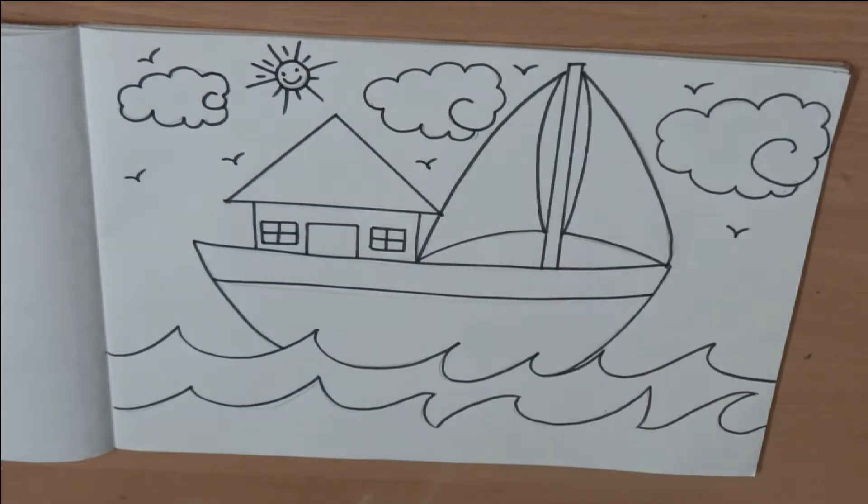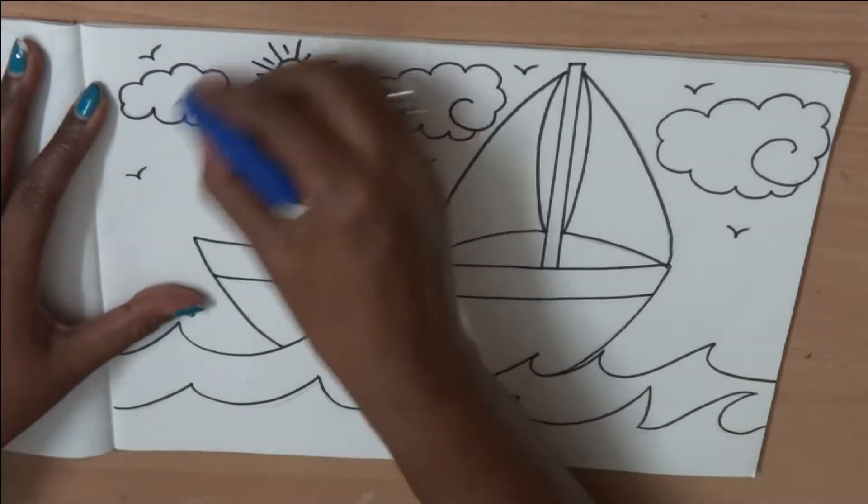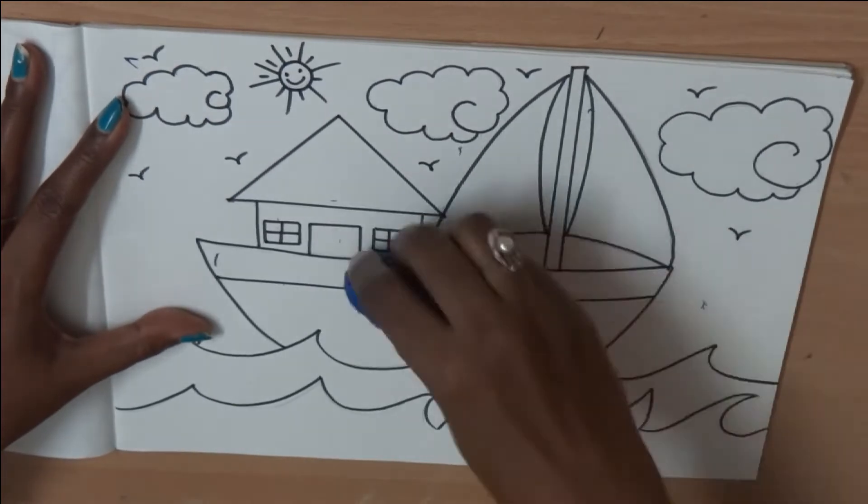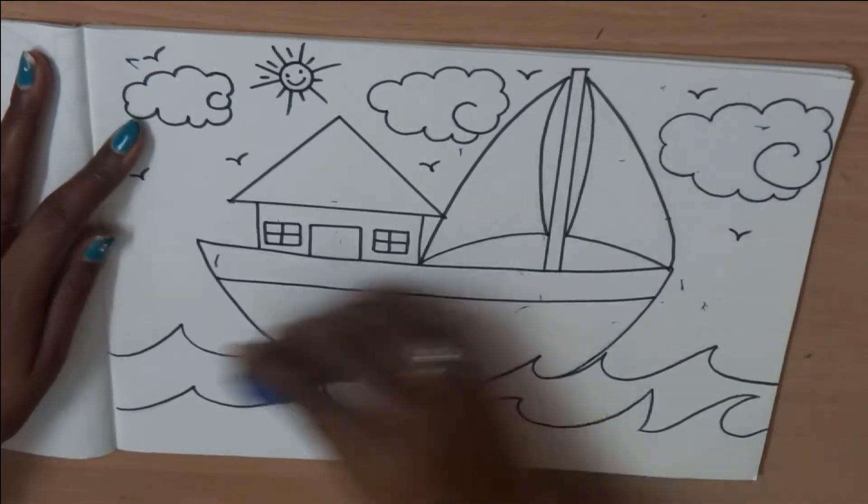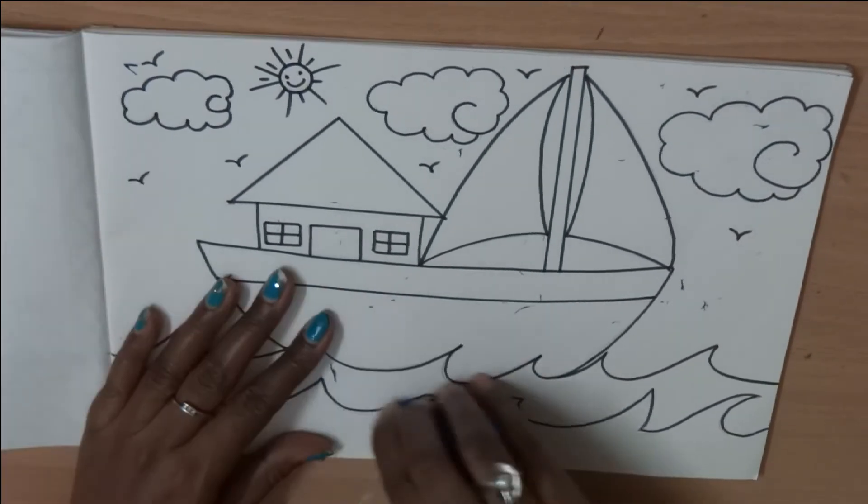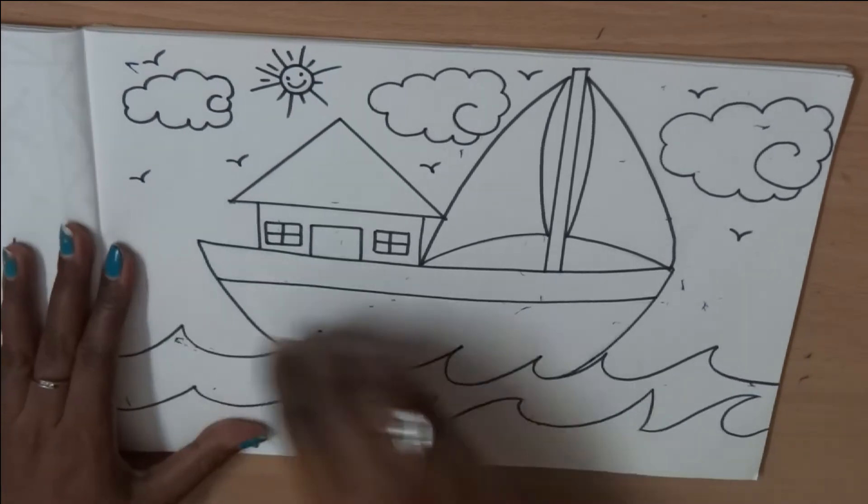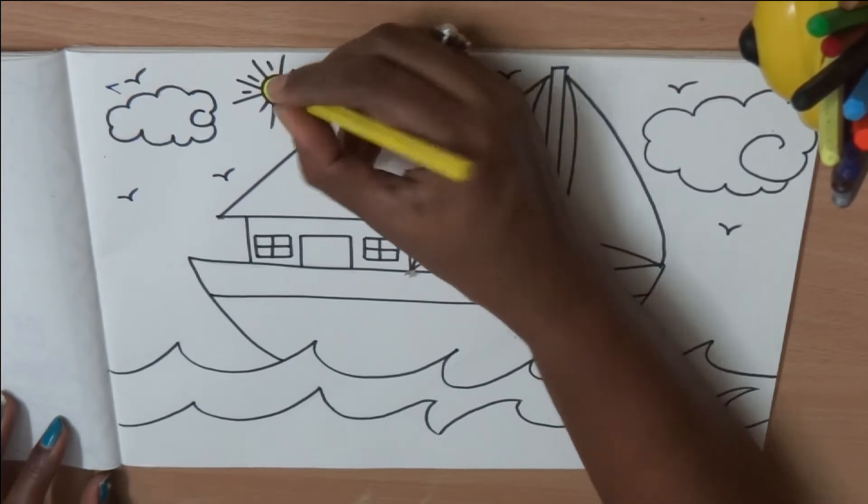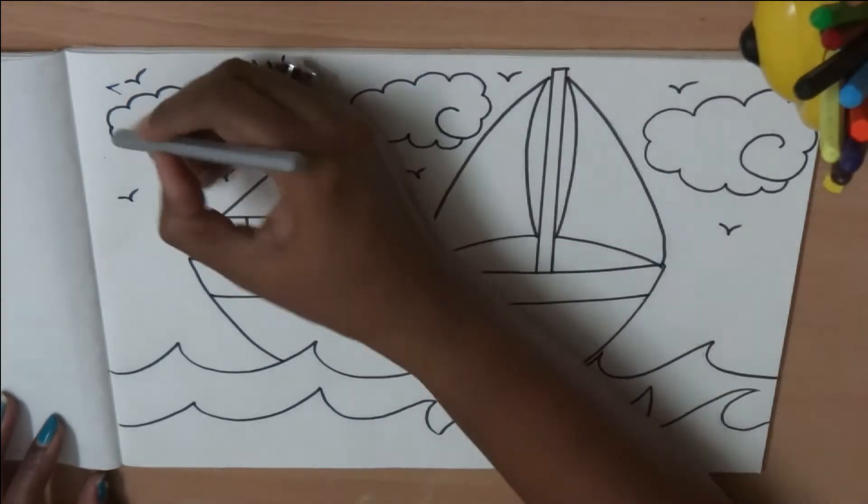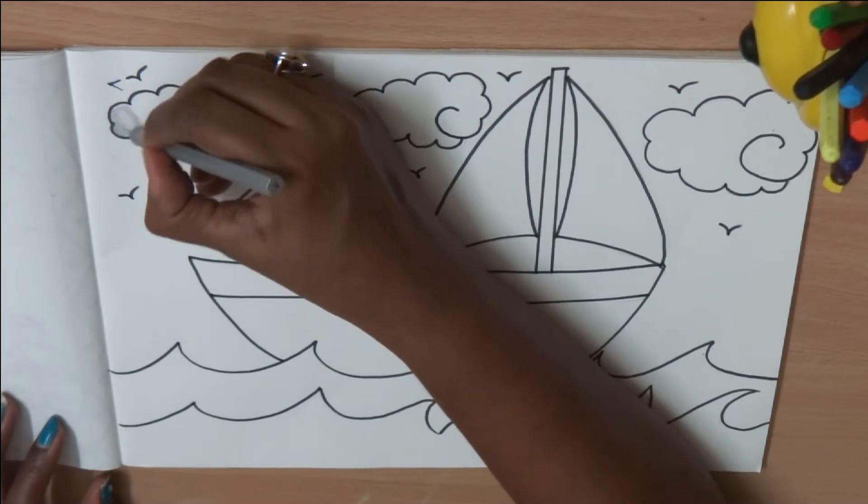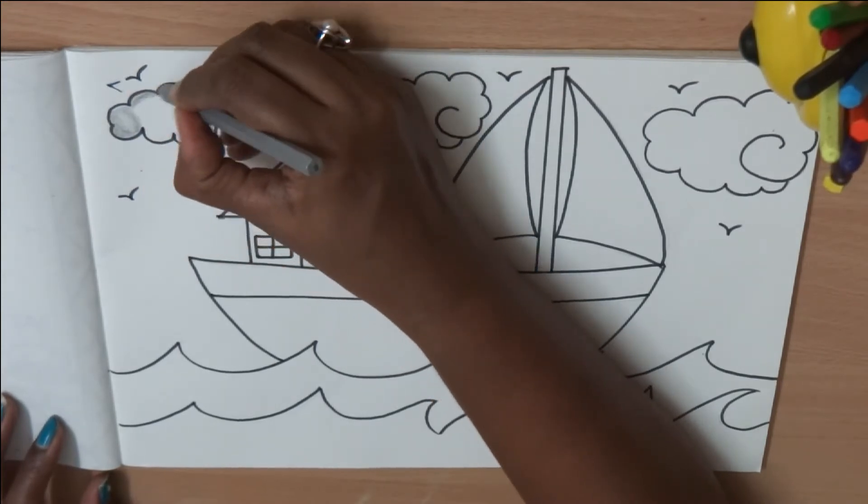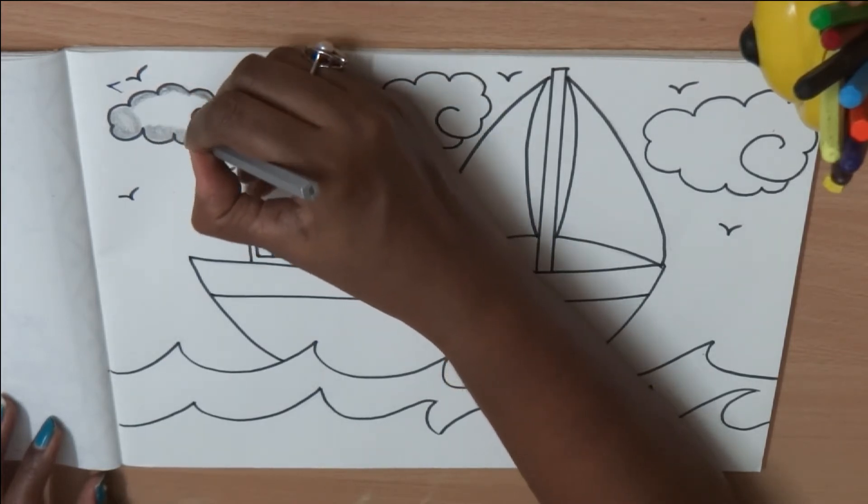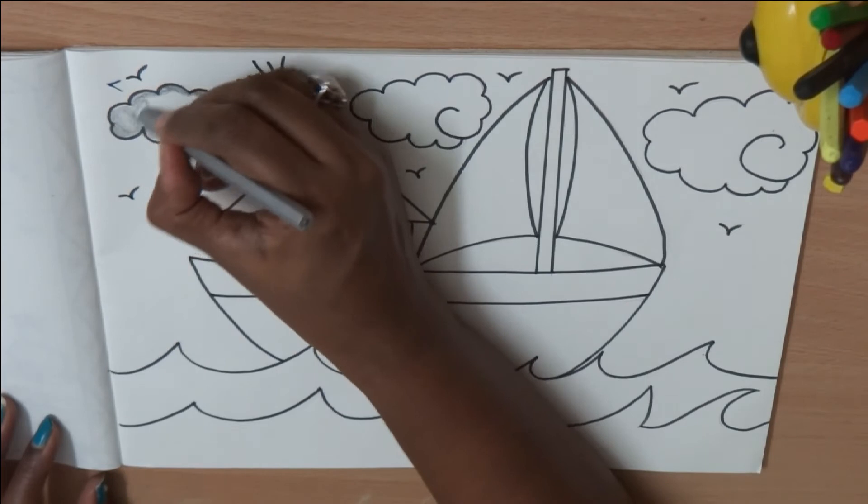The next step is coloring. Before that, we have to erase all the pencil lines that we see. Quickly erase it off, clean the page, get ready with your color pencils to color. So we know the sun is yellow. I am going to color the clouds grey. So before we color, I tell you the coloring rules. Color in the borders first and then you fill inside. You may ask me why? If you do like this, your color will not go out and your pictures will look very neat.